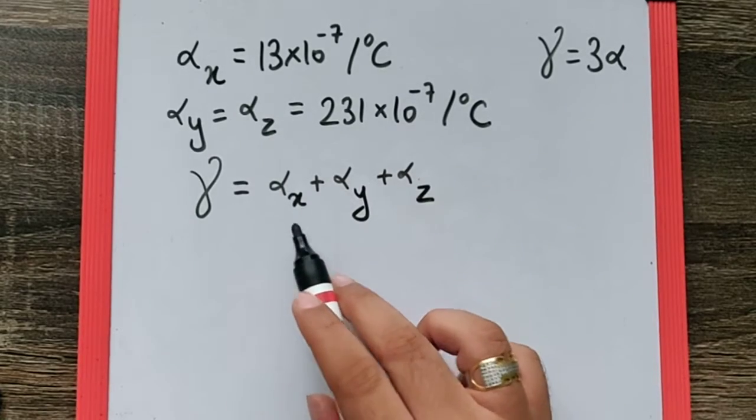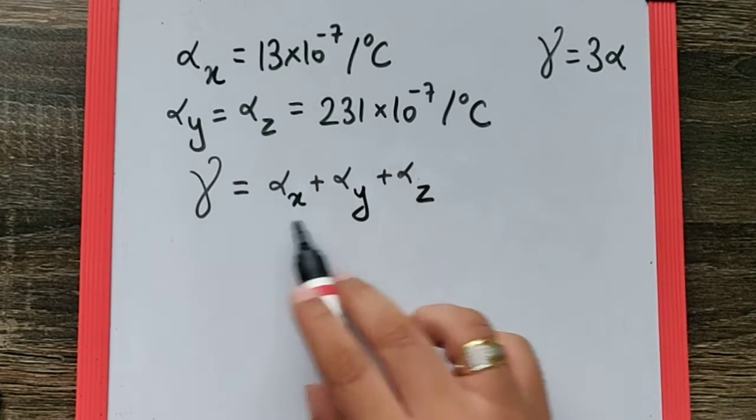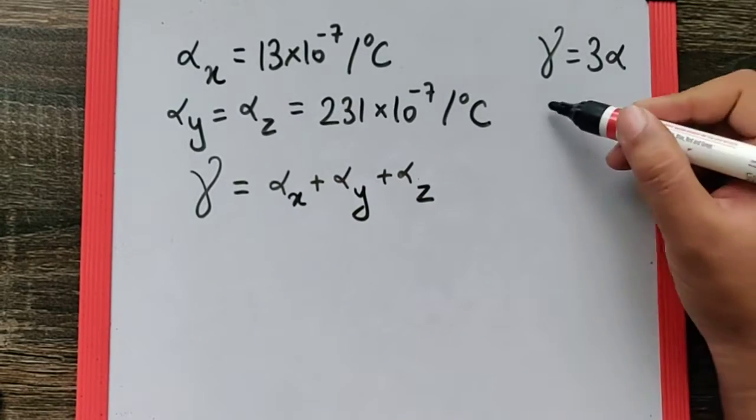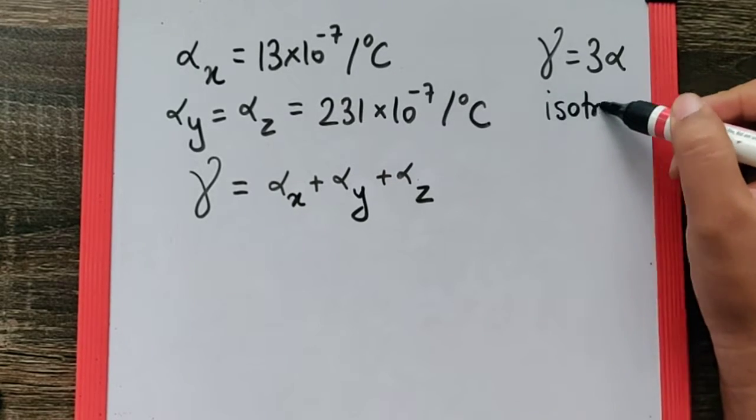If the expansion in all three dimensions is the same, it becomes 3α, and that's why this formula is applicable for isotropic expansion.